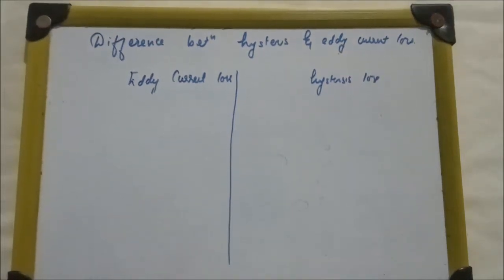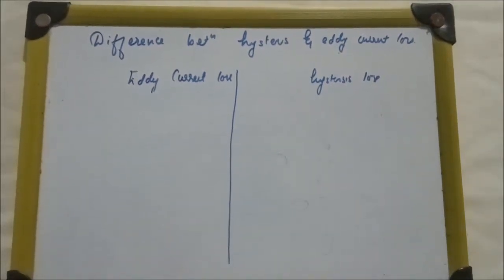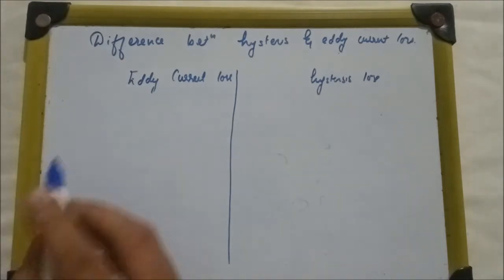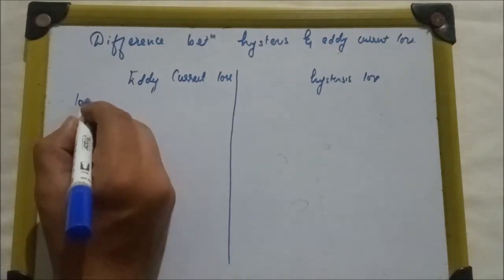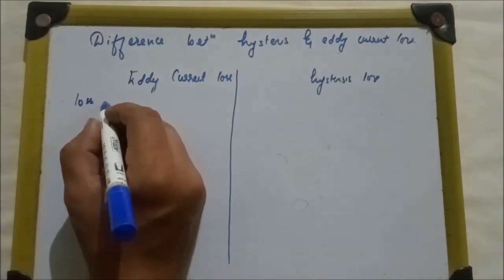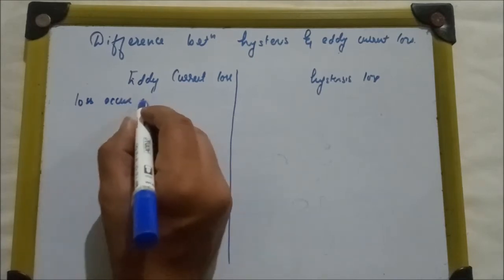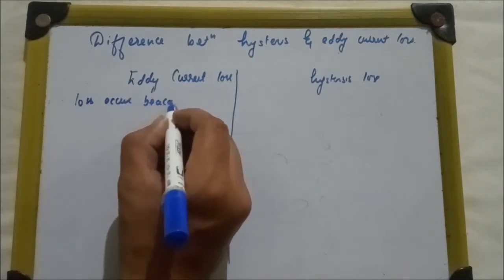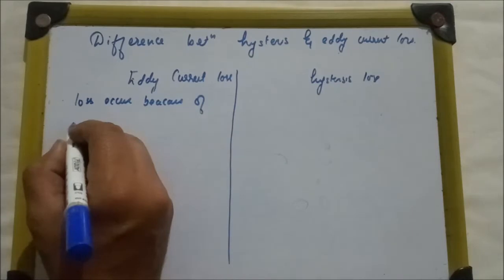Today we are going to discuss the difference between eddy current and hysteresis loss. Starting with definition, the eddy current loss means the loss occurs because of relative motion between the core and magnetic flux.